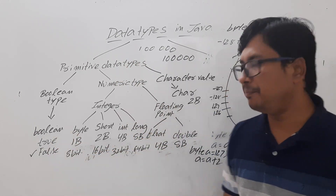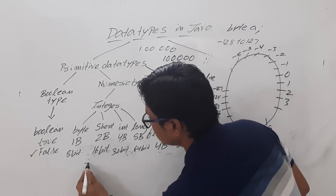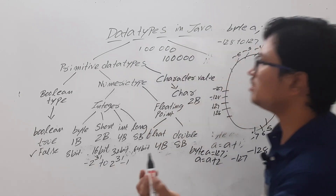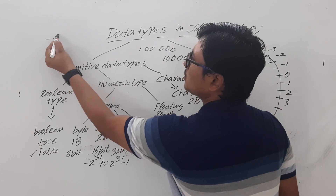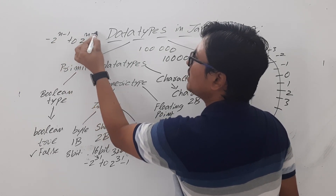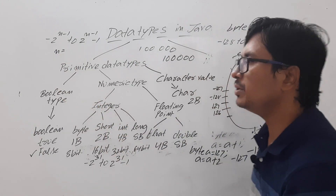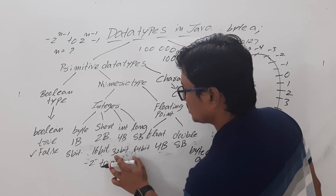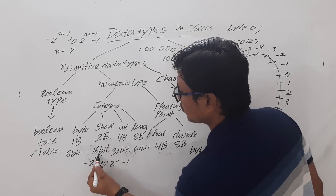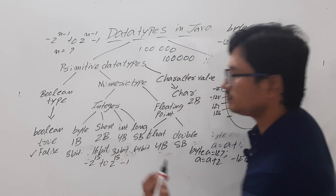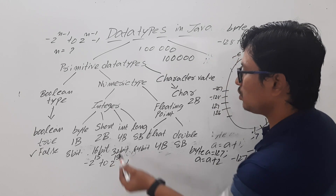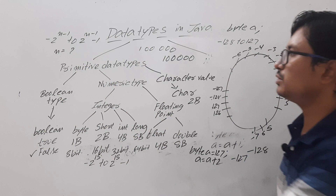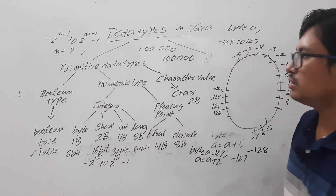The range formula is minus 2 to the power n minus 1 to 2 to the power n minus 1 minus 1, where n is the number of bits. For short, it occupies 16 bits, so the range is minus 2 to the power 15 to 2 to the power 15 minus 1. For int with 32 bits, substitute n equals 32 to get the range. Similarly for long. Based on what value you want to store, you declare the variable with the corresponding data type.